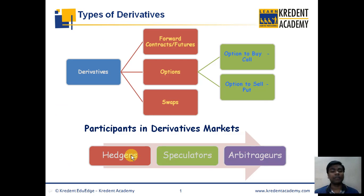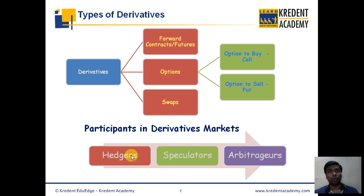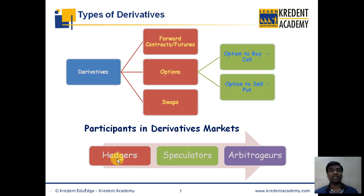Hedgers are basically investors or traders who are trading in the derivatives market to reduce their risk. As shown in the example of a farmer and a baker getting into a derivatives contract, hedgers participate in the derivatives market specifically to reduce their risk.